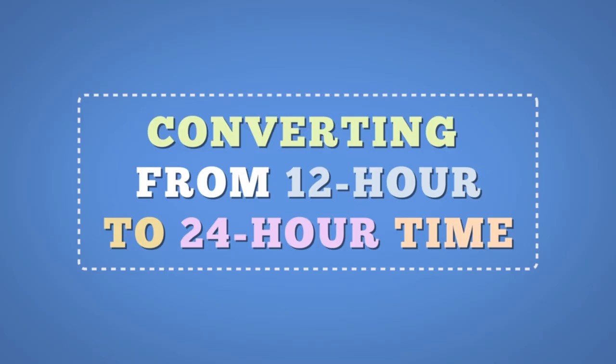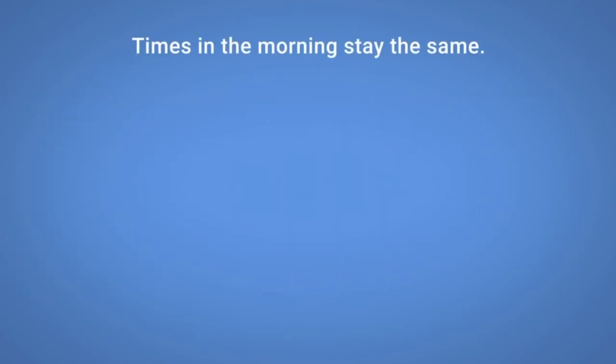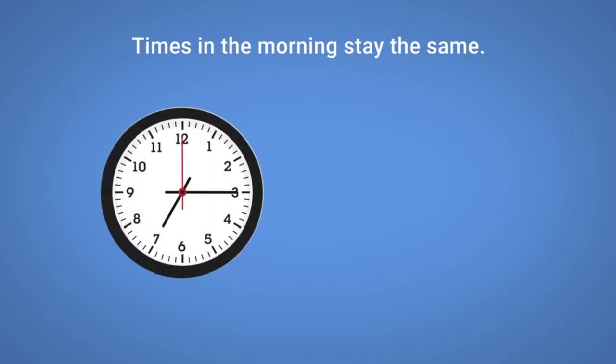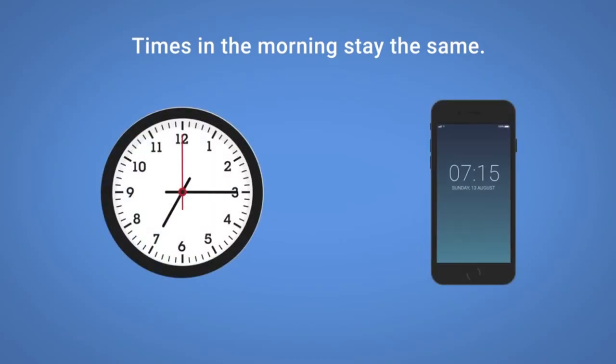Converting from 12-hour to 24-hour time. Times in the morning stay the same. 7:15am is 07:15 on a 24-hour clock.